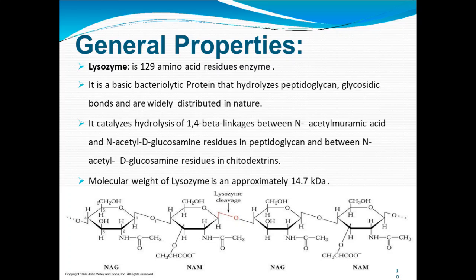The general properties of lysozyme: it has 129 amino acid residues, it is a basic bacteriolytic protein that hydrolyzes peptidoglycan, and it catalyzes the cleavage of beta-1,4 glycosidic linkages between NAM and NAG. It has a molecular weight of around 14.7 kilodaltons. NAG and NAM are connected by beta-1,4 glycosidic linkages, and lysozyme acts on these linkages, breaking them down and thereby disturbing the integrity of the bacterial cell wall.